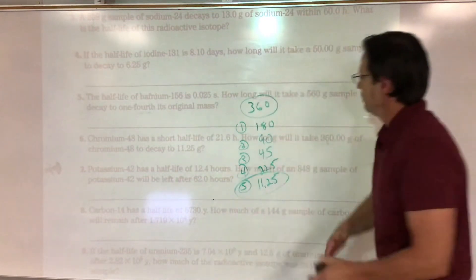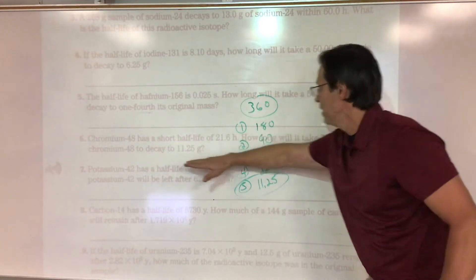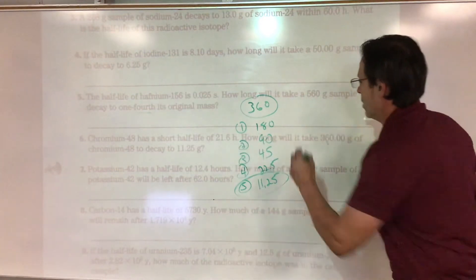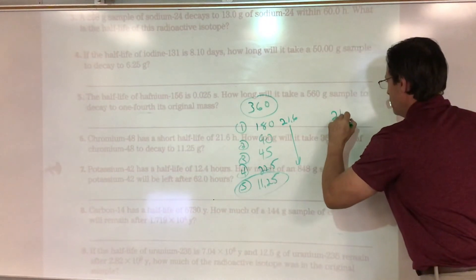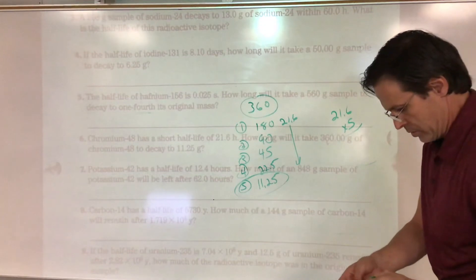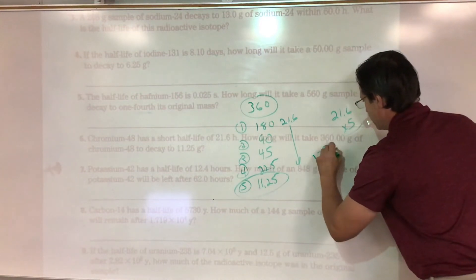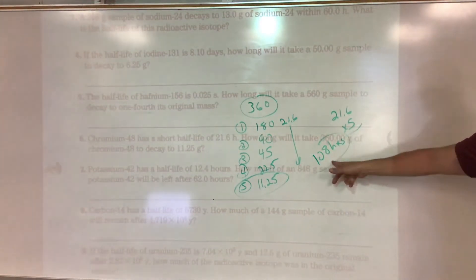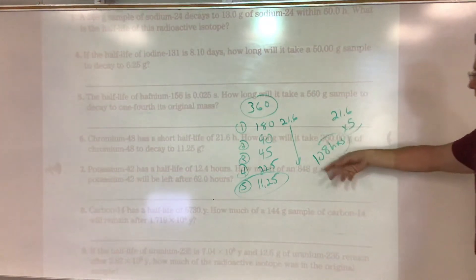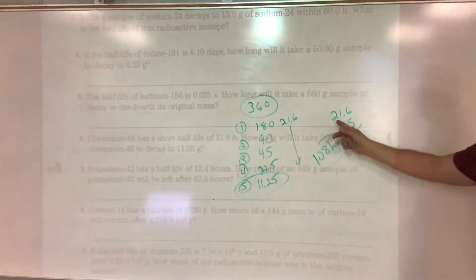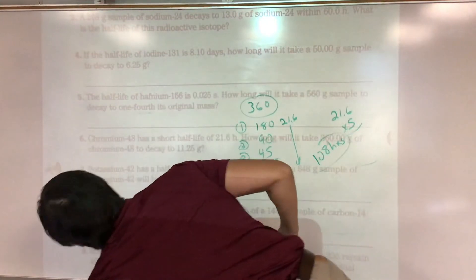Half of 22.5 is 11.25 — so that's five half-lives. Each step took 21.6 hours, so 21.6 times 5 equals 108 hours. It went through five half-lives, and the total time is 108 hours.